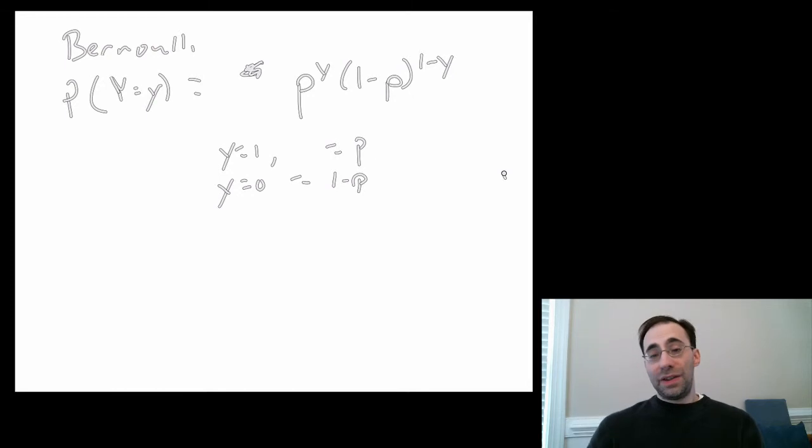And that's the Bernoulli distribution. So it requires that you have a dichotomous pair of events, and that they're independent. So if I were to do this again, I cannot have the outcome of the second time be dependent on the outcome of the first time.